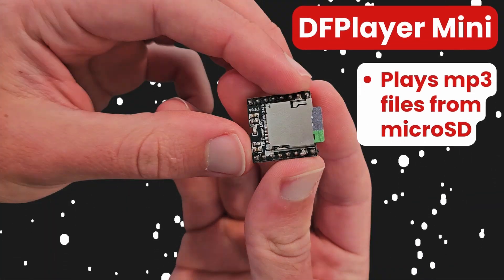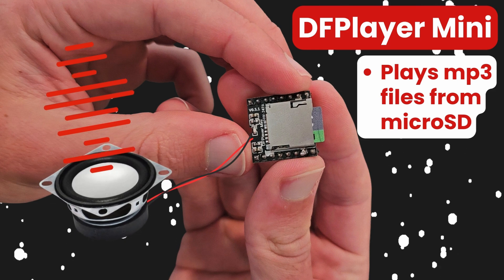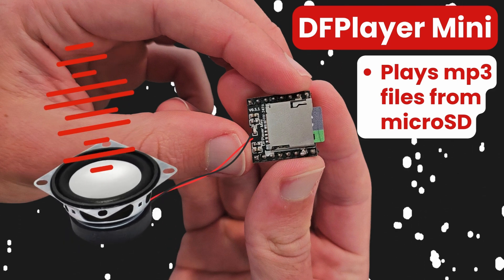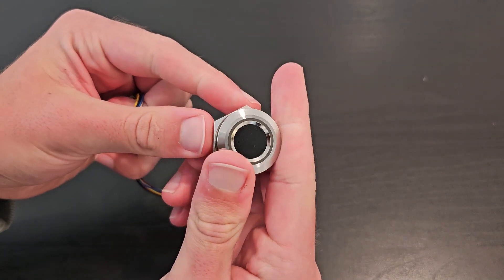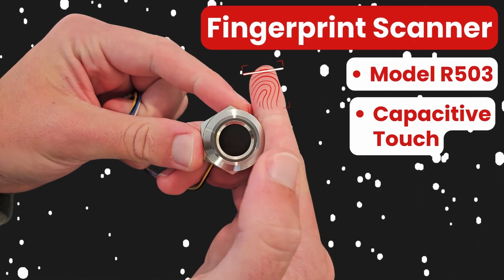We're also going to hook up something called a DF Player Mini along with a cheap 3-watt speaker, which will simply allow us to slot in a micro SD card and play some pre-recorded mp3 files that we can control with the Arduino. And of course, we also have our fingerprint scanner, which uses a dense capacitive touch sensor to check whether or not a fingerprint is authorized to wield that sourdough blade.